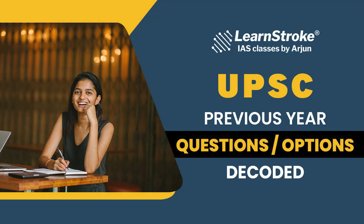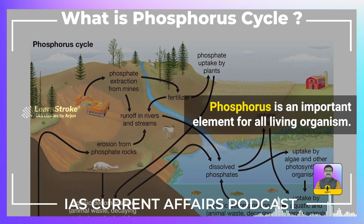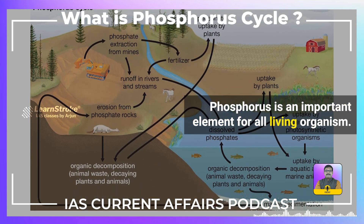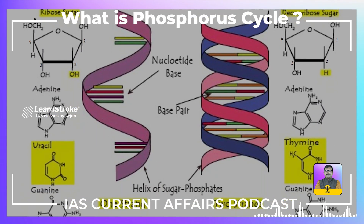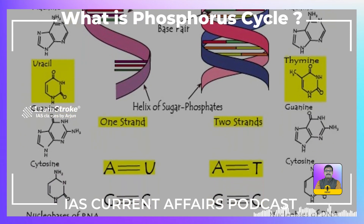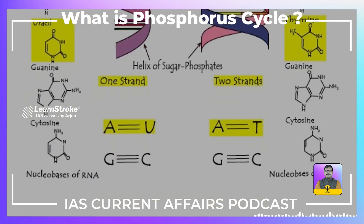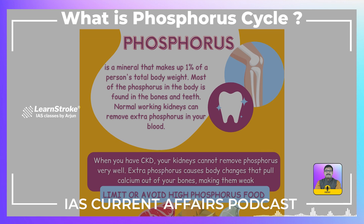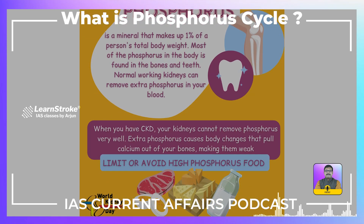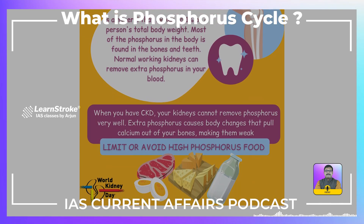What is the Phosphorus Cycle? The Phosphorus Cycle has appeared in the UPSC prelims examination many times as a question and as an option. Phosphorus is an important element for all living organisms. It forms a significant part of the structural framework of DNA and RNA, and is also a very important component of ATP. Humans contain 80% of their Phosphorus in teeth and bones.